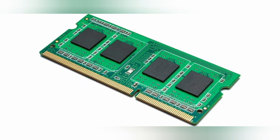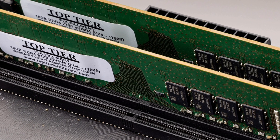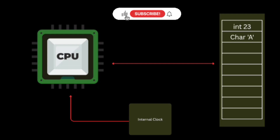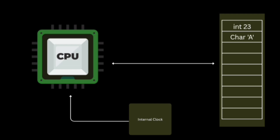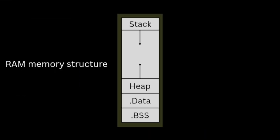Next, we have RAM. This is something we're already familiar with from our laptops and PCs. RAM, or Random Access Memory, is the volatile memory used to temporarily store data while the microcontroller or processor is running. It holds things like program variables such as counters, buffers, or sensor readings, and the stack and heap, which store function calls, return addresses, and dynamic data. When power is turned off, all data in RAM is lost.